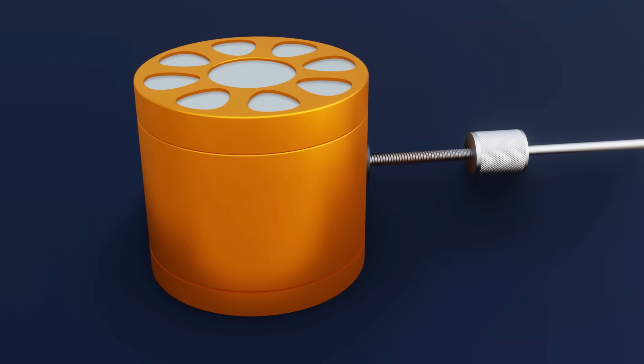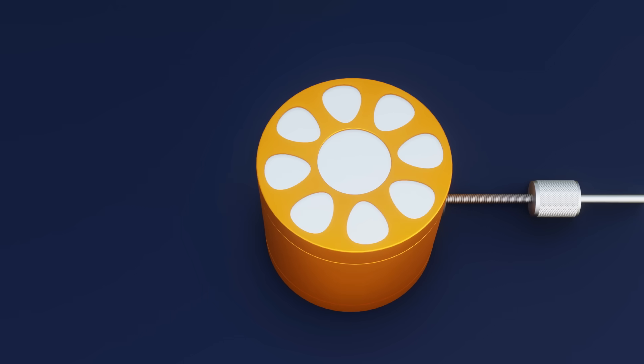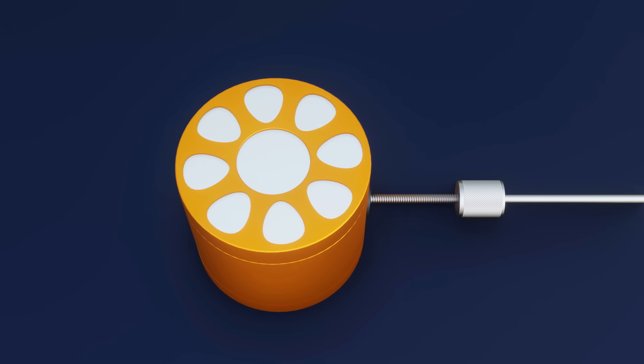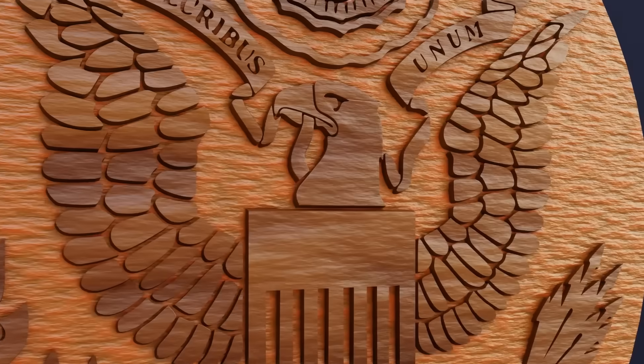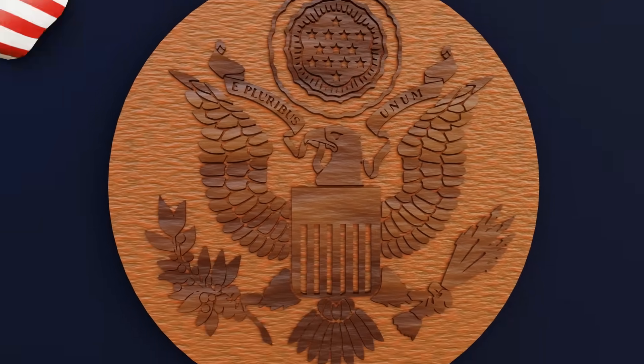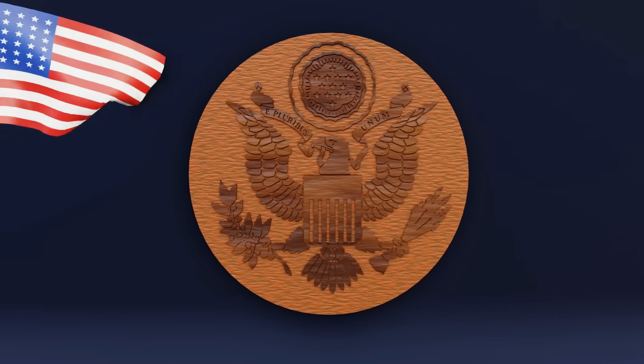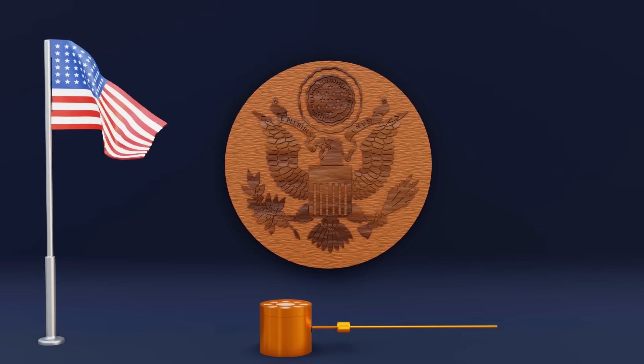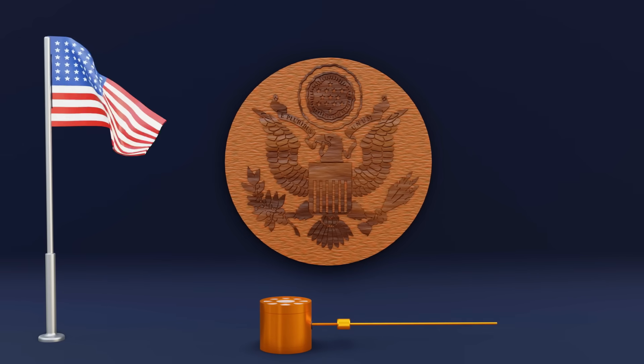Imagine a device so advanced that it could spy on a government official for seven years, without any wires, batteries, or conventional electronics. This is the story of the Great Seal Bug, an ingenious Soviet listening device that remained undetected in the U.S. Embassy from 1945 to 1952.